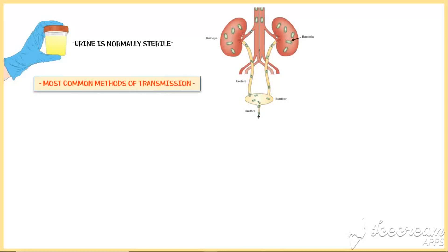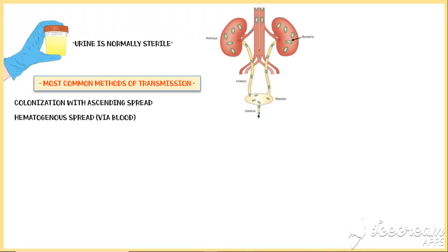The most common methods of transmission of these pathogens are colonization with ascending spread, as you can see in the picture above, hematogenous spread, and periurogenital spread.